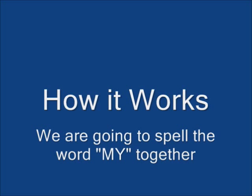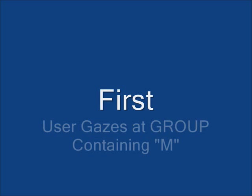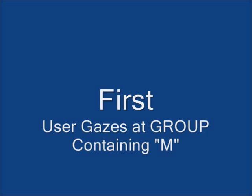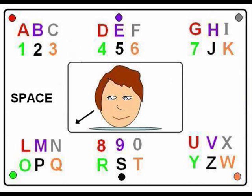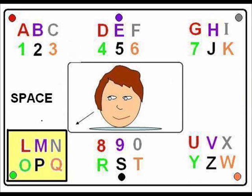Now let's learn how an e-tran board works. We are going to spell the word 'my' together. First, the user gazes at the group containing the letter M. The partner watches the user's eyes and calls out the color of the group at which the user is gazing. The partner would call out 'green.'